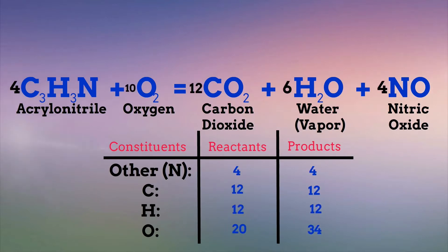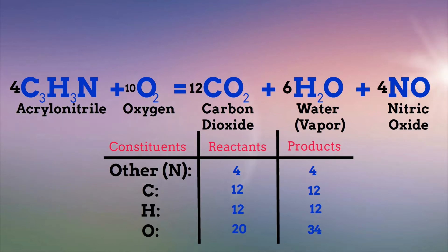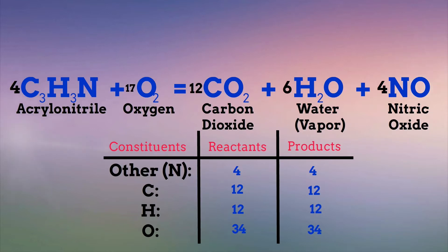So now we will start over our process — hopefully the third time's the charm. For nitrogen, we have four atoms on both the left and the right. We have twelve carbon atoms on the left and twelve on the right. We have twelve hydrogen atoms on the left and twelve on the product side — we are balanced. For oxygen, we have twenty atoms on the left and thirty-four on the right. We can change our coefficient for the oxygen molecule on the left from ten to seventeen, and now we are balanced for oxygen. We are now balanced across the board: four atoms of nitrogen, twelve atoms of carbon and hydrogen, and thirty-four atoms of oxygen on both sides. We are done balancing this equation.